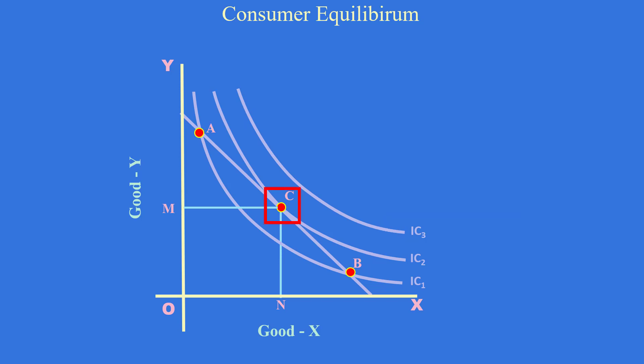The consumer is in equilibrium at point C. He consumes N units of good X and M units of good Y. The answer ends here.